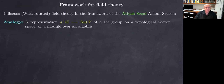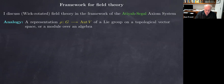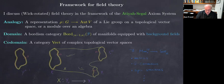I'm talking about field theory, and in the back of my mind is the framework for field theory that comes from Segal in two-dimensional conformal field theory in the 80s, and in the late 80s also Atiyah in the topological case — but we think of that framework as applying in general. The analogy you should think of is simply a representation of a Lie group on a vector space, or perhaps on a topological vector space. The domain is a bordism category whose objects are closed n minus one manifolds, with bordisms being compact n-manifolds between them, equipped with background fields.